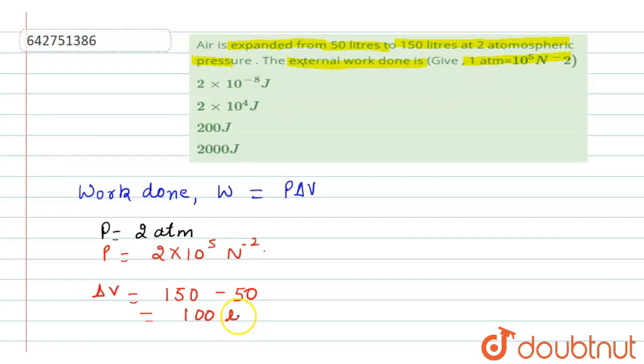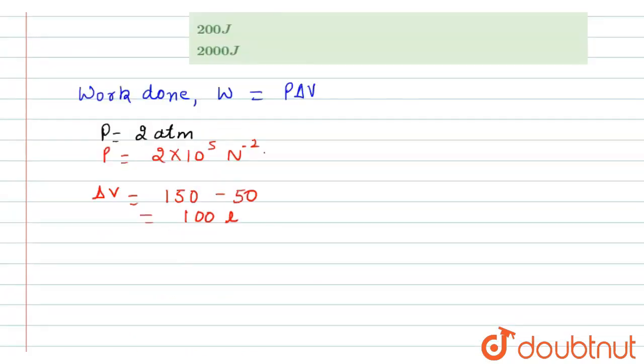we will convert into meter cube. So we know that here if we want to convert into meter cube, then we have to divide it by thousand. So we can write here that it is equals to 100 divided by thousand meter cube. And this will be equals to delta V is equals to 0.1 meter cube.